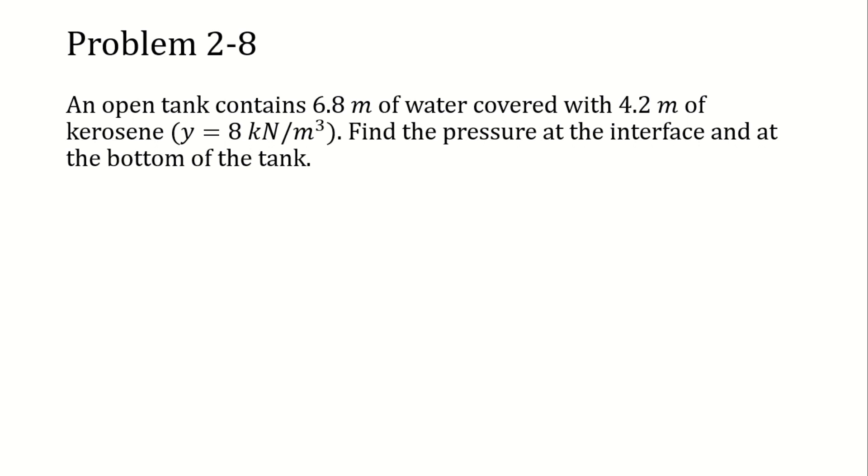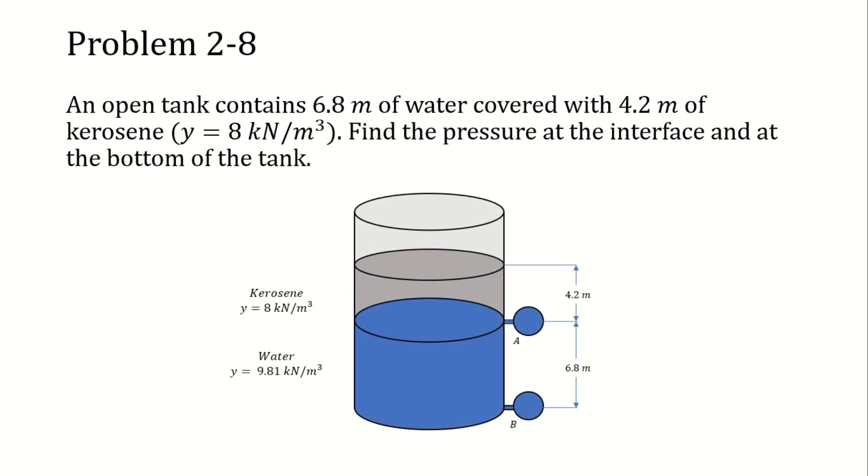So in this problem we are asked to find the pressure at the interface and the bottom of the tank. To further understand the question, here's an illustration. The blue color covers the height of the water which is 6.8 m while the gray one here covers the height of the kerosene which is 4.2 m.